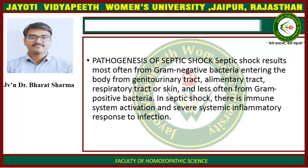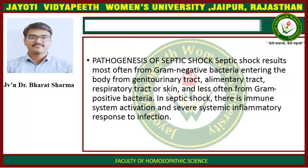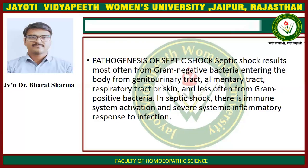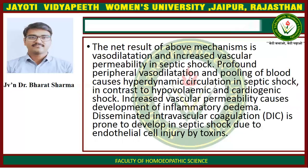Pathogenesis of septic shock. Septic shock results most often from gram-negative bacteria entering the body from the genitourinary tract, alimentary tract, respiratory tract, or skin, and less often from gram-positive bacteria. In septic shock, there is immune system activation and a severe systemic inflammatory response to the infection. The net result of the overall mechanism is vasodilation and increased vascular permeability.